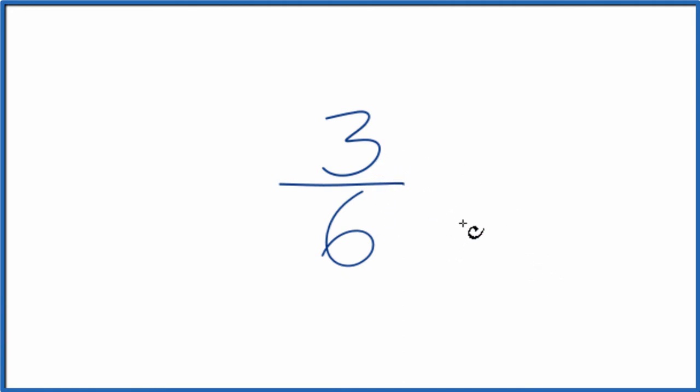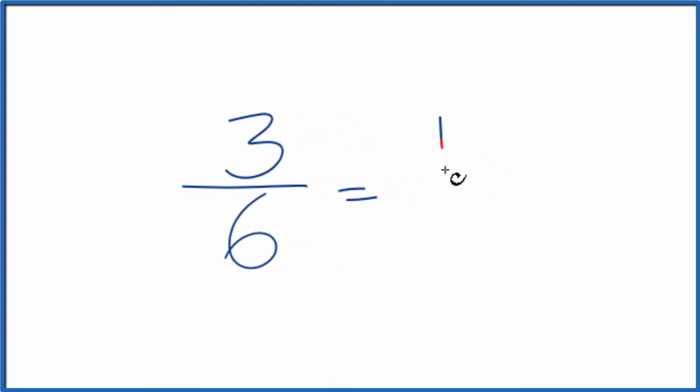First off, we could reduce this to a more simple form. Three goes into three once, and three goes into six twice. So three-sixths, that's the same as one-half. They're equivalent fractions.